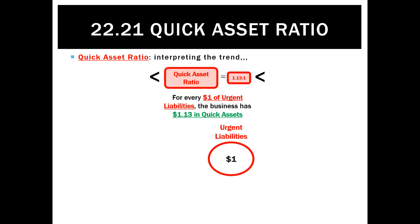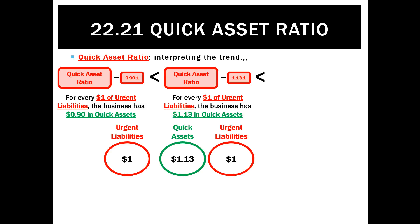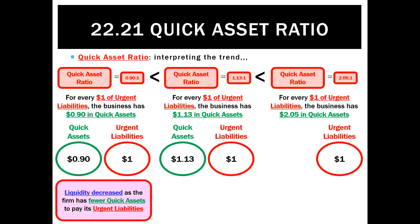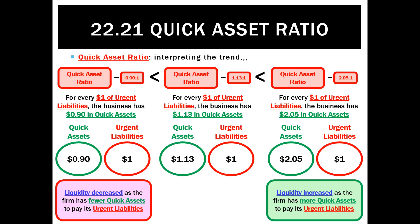Looking at the trend: if the ratio went from 1.13 to 1 down to 0.90 to 1, that means for every dollar of urgent liabilities we now only have 90 cents in quick assets — we're 10 cents short. Liquidity has decreased and we have fewer quick assets to pay urgent liabilities. If that ratio went up to 2.05 to 1, for every dollar of urgent liabilities we've now got $2.05 of quick assets — that's a good trend and our liquidity has increased.